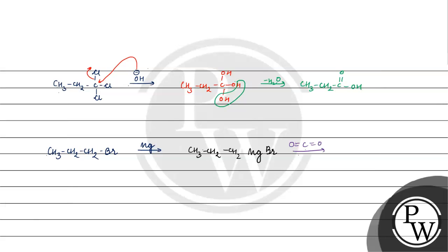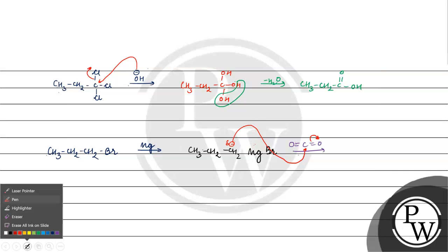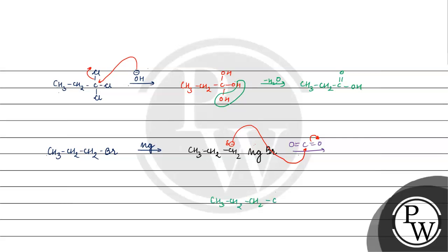What will we do? Magnesium is electropositive, carbon is electronegative. So what will we do? We will attack our carbon. Oxygen will move the electron density. What will we get? CH3 CH2 CH2 C double bond O, O minus.